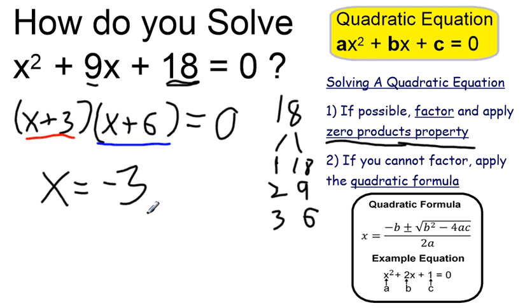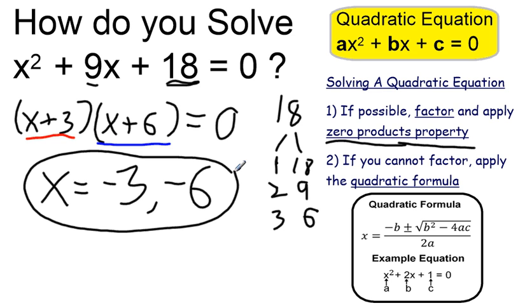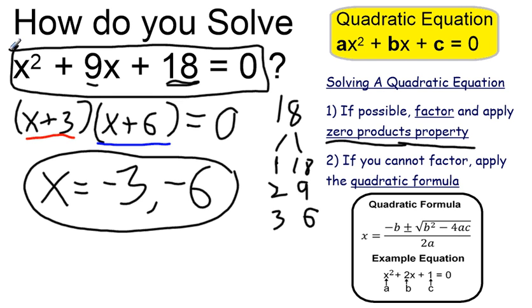The other solution, which makes the second part true, would be x equals negative 6. So those are our two possible solutions for the original quadratic equation. I solved by factoring and the zero products property.